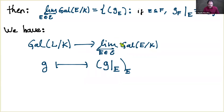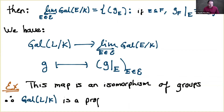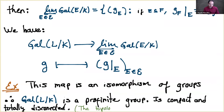This profinite group comes with a topology — the topology that makes it a profinite group — called the Krull topology. The interesting fact is that in fact this map is an isomorphism, meaning the Galois group Gal(L/K) is itself a profinite group once identified with this projective limit. So every Galois group is a profinite group — it is compact and totally disconnected — and the topology is given exactly by this projective limit, called the Krull topology.